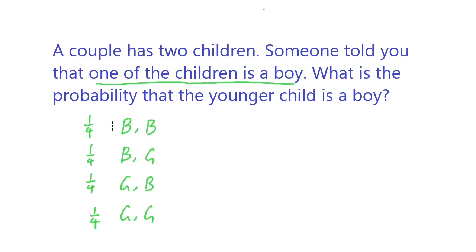Among the first three cases, the younger child being a boy corresponds to this case and this case. You have one-fourth from this plus one-fourth from this, divided by the sum of these three: one-fourth plus one-fourth plus one-fourth, which equals two over three.